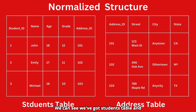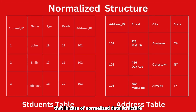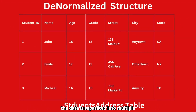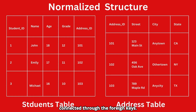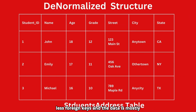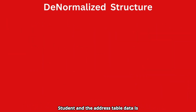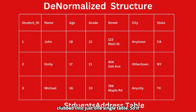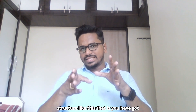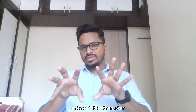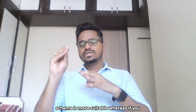In a normalized data structure the data is separated into multiple tables — for example, a students table and an address table — and these tables are connected through foreign keys. Whereas in a denormalized data structure there are fewer foreign keys and the data is mostly packed into fewer tables. As we can see, the student and address data is clubbed into just one single table. If you have a denormalized structure like this, the star schema is more suitable.